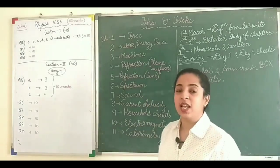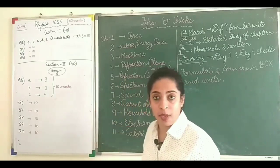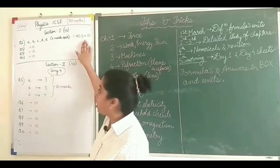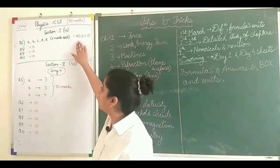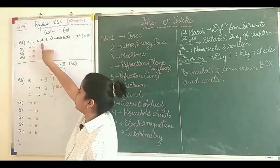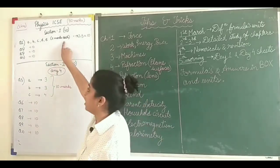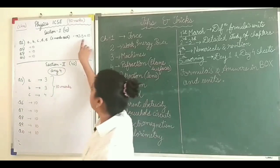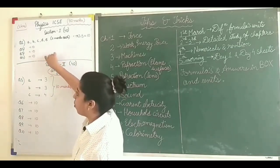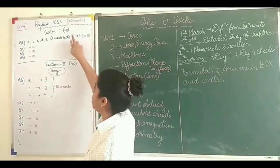Before going for tips and tricks let me first give you a quick recap on the format of the paper. See, our physics paper is of 80 marks, as you all know, it's for two hours. Now section A which is compulsory consists of four questions. Each question is divided into A, B, C, D, E, five parts and each part carries two marks. So the total of 10 marks for one question, similarly 10 marks for all the four questions. So first section comprises of four questions carrying 10 marks each, so 40 marks here.